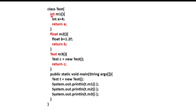For example, I have created m1 method with integer return type, so m1 will return an integer type value. I have created m2 method with float return type, so m2 will return a float type value. Similarly, I have created m3 method with a class type as the return type. Here I have written Test as the return type, so this method will return a Test class object. Always keep in mind: if the return type of a method is a class type, that method will return an object of that class.